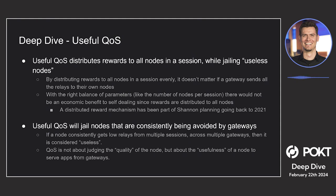That eliminates the ability to send relays to your own node for economic advantage — regardless, all rewards are spread to all nodes in the session. Your node works more than anyone else's, but everyone gets paid the same. So it doesn't make sense to attack your node that way. Useful QoS also means that Watchmen — expected to come later with Shannon, just not at launch — would ensure nodes are actually quality, preventing people from creating fake nodes, filling sessions with them, and collecting rewards without doing any real work.